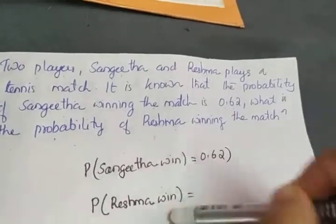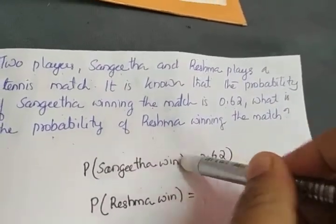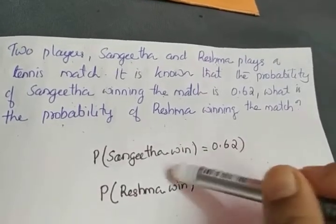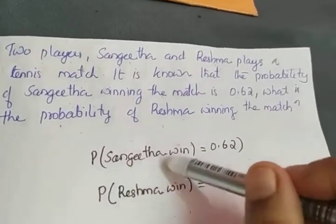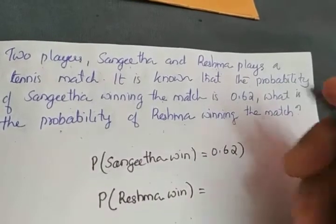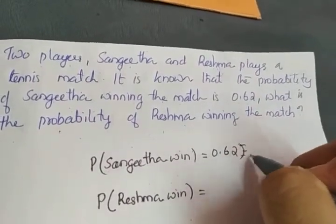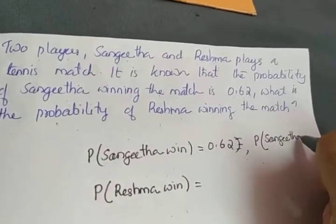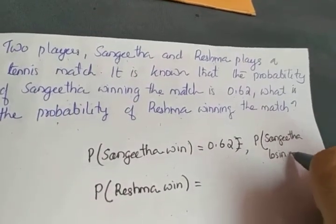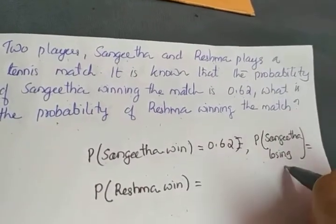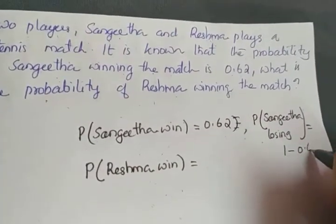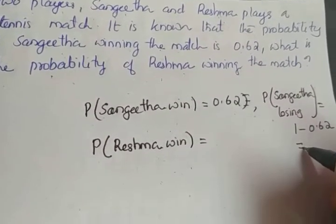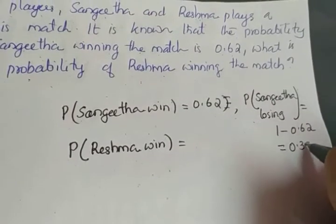If Reshma wants to win, Sangeeta must fail. The probability of Sangeeta winning the game is given as 0.62. So first, we have to find the probability of Sangeeta losing the game. The probability of Sangeeta losing will be 1 minus 0.62, which gives the value 0.38.